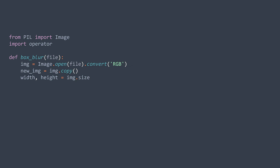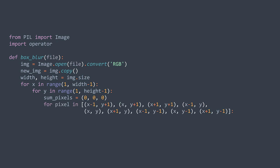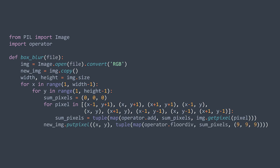We want to avoid edge pixels because they don't have enough neighbors. So we avoid the first and last row and the first and last column. This is why in our loops, x and y — the position of the actual pixel — go from 1 to width minus 1 and 1 to height minus 1 respectively. For each pixel, we create a variable sum, which is a tuple of three zeros because we're working with RGB. Then for each neighbor including the actual pixel, we get its RGB value and add it to our sum. After doing so, we divide the result by nine and assign it to the actual pixel in the new image. After the loops, we return our new image, which is the input image blurred using box blur.